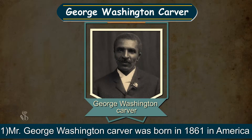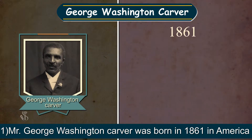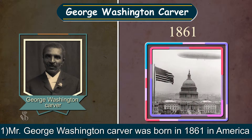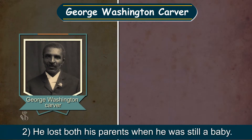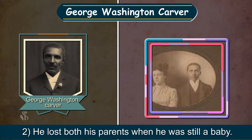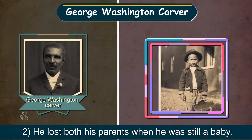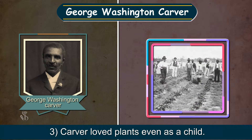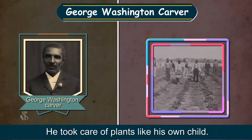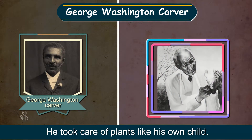One: George Washington Carver was born in 1861 in America. Two: he lost both his parents when he was still a baby. Three: Carver loved plants even as a child — he took care of plants like his own child.